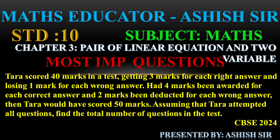Hi dear students, welcome to Maths Educator. This is Standard 10th Maths, Chapter No. 3 - Pair of Linear Equations in 2 Variables. The most important question here to solve: TARA scored 40 marks in a test, getting 3 marks for each right answer and losing 1 mark for each wrong answer. Had 4 marks been awarded for each correct answer and 2 marks been deducted for each wrong answer, then TARA would have scored 50 marks. Assume that TARA attempted all questions. Find the total number of questions in the test.